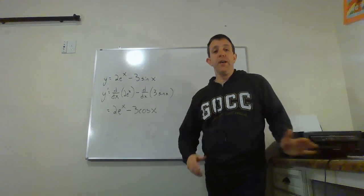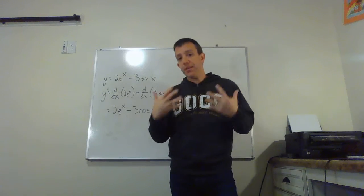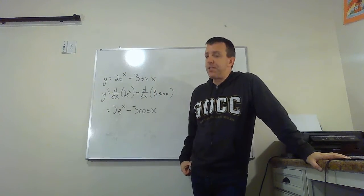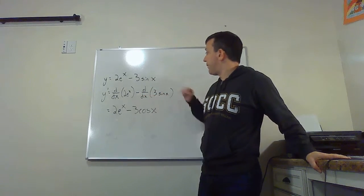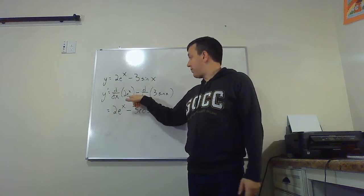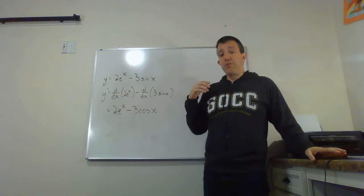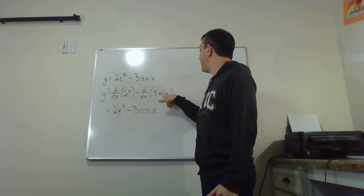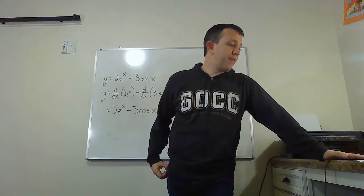We have subtraction in the middle, which is wonderful because it lets us take the two derivatives separately. Addition and subtraction will always split up your derivative, making your life much easier. I need the derivative of 2eˣ, then minus the derivative of 3 sine x. Constants stay out front, and the derivative of eˣ is itself, so we get 2eˣ. The derivative of sine is cosine, so we get minus 3 cosine x. That's the derivative.